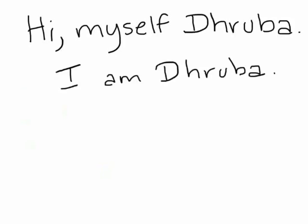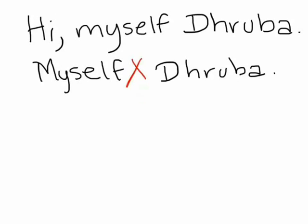Now that we've got that out of the way, let's go back to that first sentence: 'Hi, myself Dhruba.' Let us place this sentence next to it. Here, 'I' is the subject and 'am' is the verb. Now it looks like what we've done is replace the subject-verb combination with the reflexive pronoun 'myself.' Obviously, we know that this is wrong because 'myself' can only be an object — it is never used as a replacement for 'me,' 'my,' or 'I.'